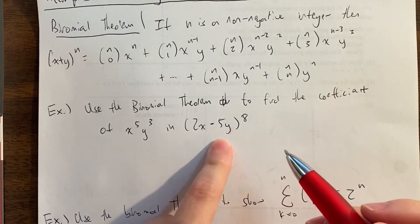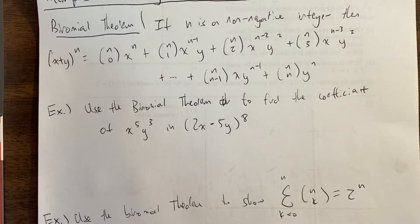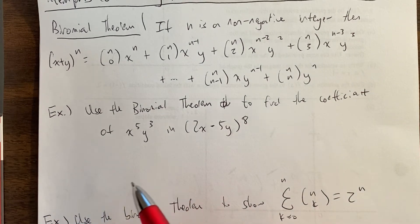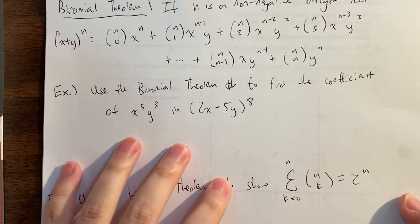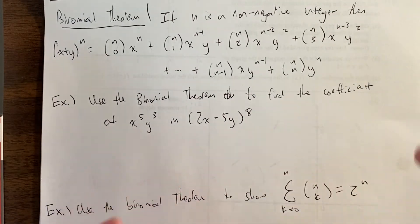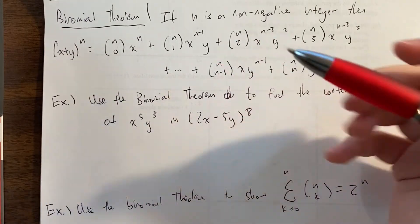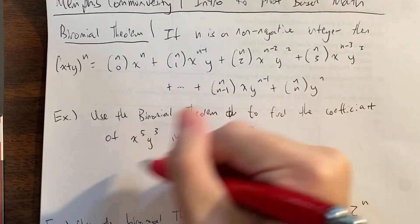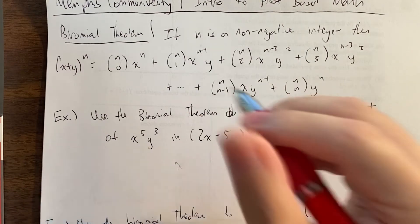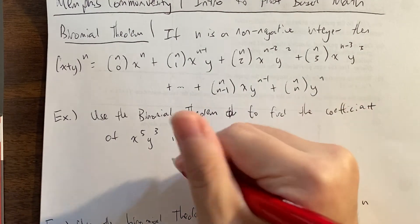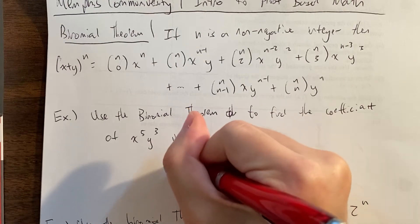Let's practice in a concrete example. We have (2x minus 5y) to the 8th. It'd be quite awful to expand this because it would take a long time. What we're trying to do is quickly find the coefficient of x to the 5th, y to the 3rd. We might not simplify it perfectly, but we're going to try our best. The binomial theorem tells us we just write the binomial coefficient for that term.